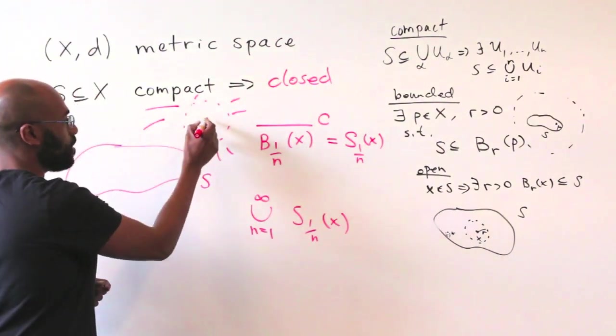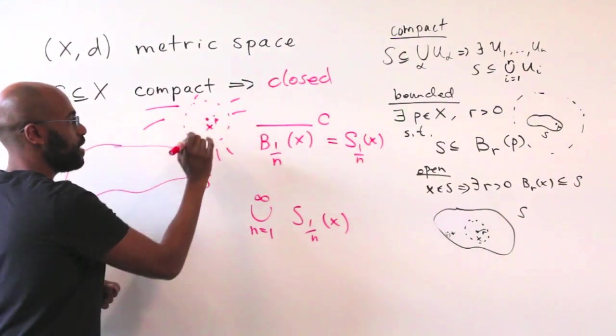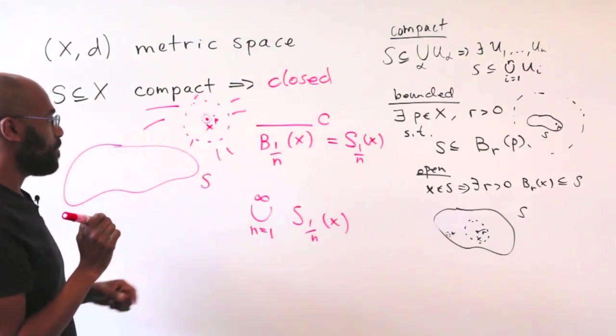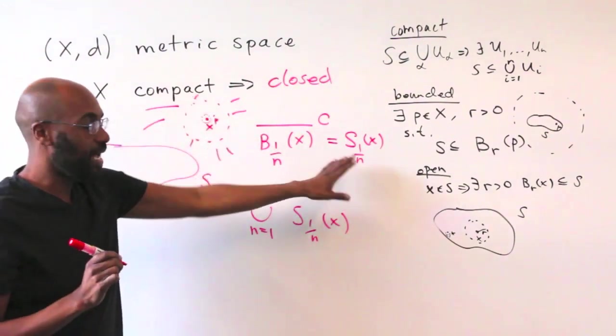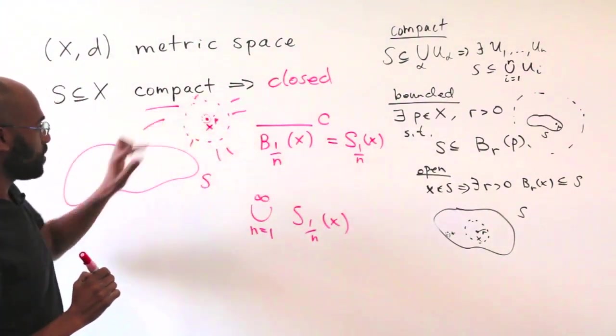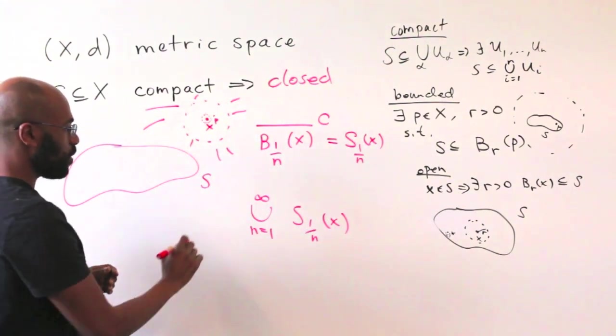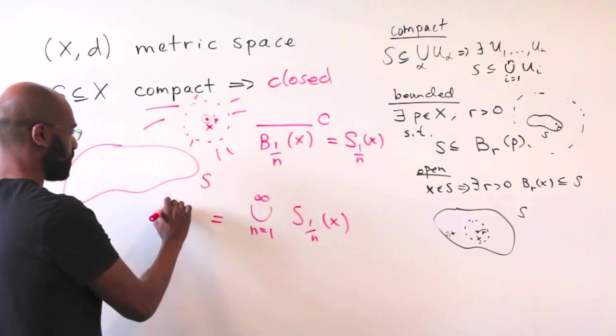That's every single point in the metric space besides X. If I pick a point like right over here, let's say P, then I can always pick some very small ball here by picking N to be large enough. And P will be inside of S_N for that consequent small ball. So this set here is actually the entire metric space with X removed.